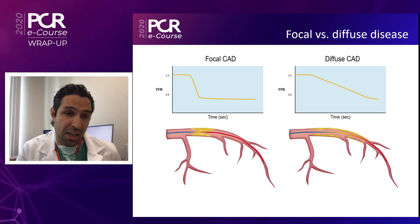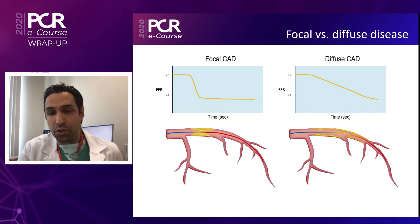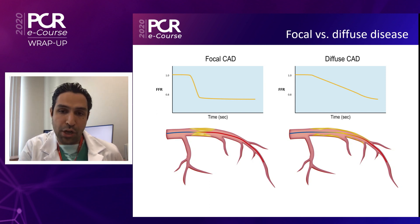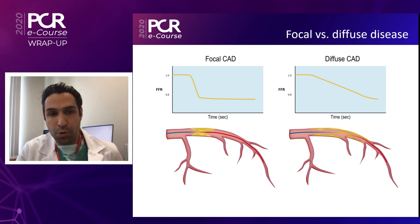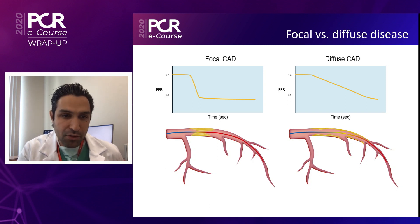In patients with focal CAD, PCI is associated with almost complete restoration of vessel physiology, better relief from angina, and better prognosis. In contrast, when you have the endotype of diffuse disease without any clear step-up in the pullback curve, PCI — which is a focal therapy — usually does not improve coronary physiology. In both cases the distal FFR value may be below 0.8, so the pullback curve provides additional information that truly helps in decision-making and strategy.